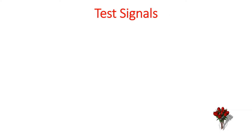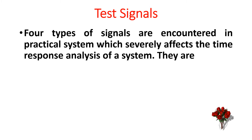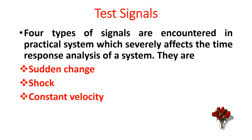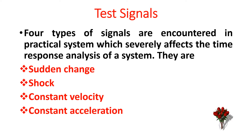Test signals. Four types of signals are encountered in practical systems which severely affect the time response analysis of a system. They are: sudden change, shock, constant velocity, and constant acceleration.